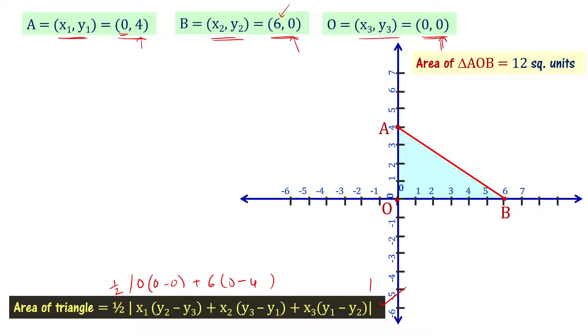Then, plus x₃ is 0. 0 times y₁ is 4 minus y₂ is 0. Now, let us simplify this. Then, simplify: 0 times 0, 6 times minus 4, and 0 times 4.